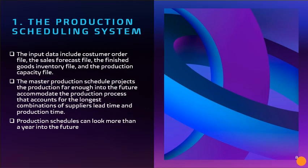Let's talk first about the production scheduling system. It uses four data files in preparing the master production schedule. The input data include the customer order file, the sales forecast file, the finished goods inventory file, and the production capacity file. The master production schedule projects production far enough into the future to accommodate the production process that accounts for the longest combination of supplier lead time and production time. Production schedules can look more than a year into the future.